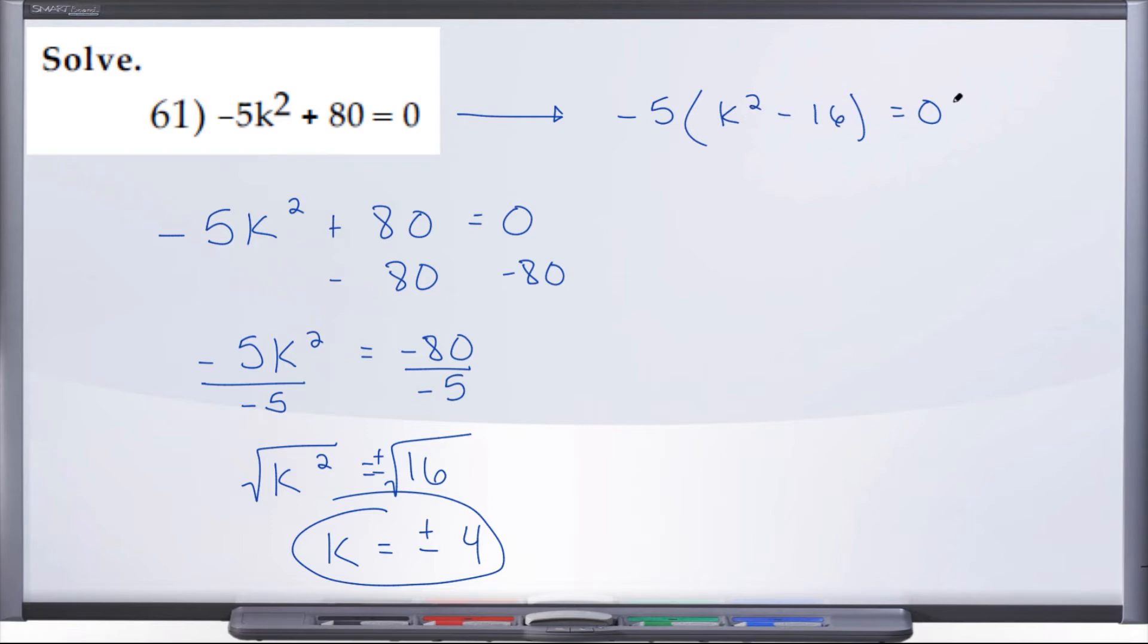So we would have negative 5 times k plus 4 times k minus 4 equals 0. Because this is set to 0, we're going to take each factor and independently set them equal to 0.